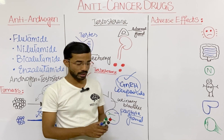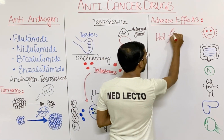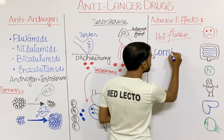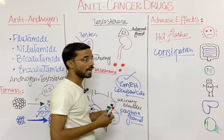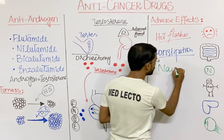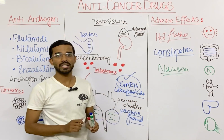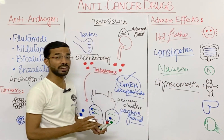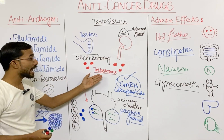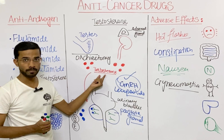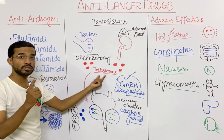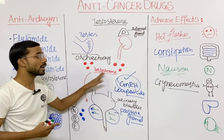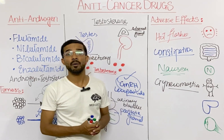Now we will discuss the adverse effects of these drugs. The most important is hot flashes, which is an adverse effect of anti-androgen drugs. Next is constipation, and third is nausea. The most important adverse effect is gynecomastia — enlargement of the breast in males — because we are disturbing the production or action of testosterone, which is very important in males, ultimately leading to gynecomastia.